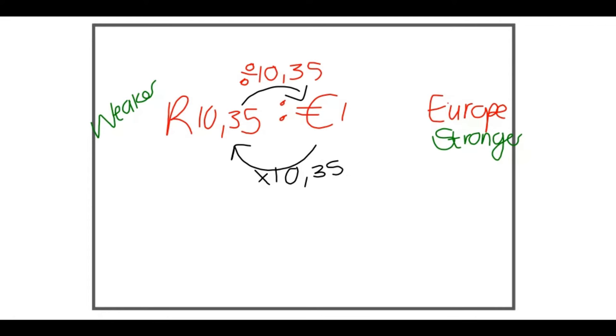Let's say I have 2,000 Rand, and I want to convert that into euros. First thing I do is I check my arrows. If I want to go from Rand to euro, I'm going to divide by 10,35. Just put it like that in your calculator, and you will get an answer of 193,24.